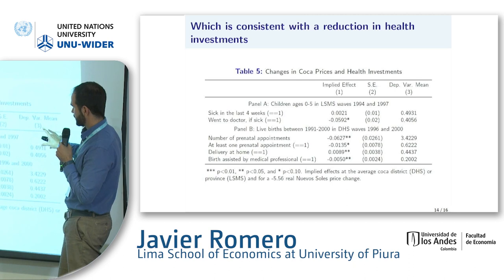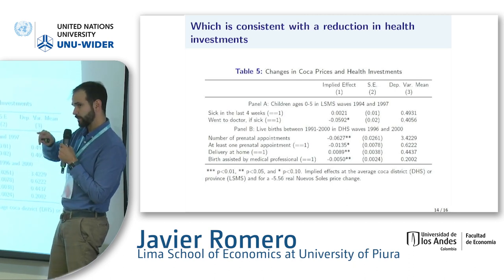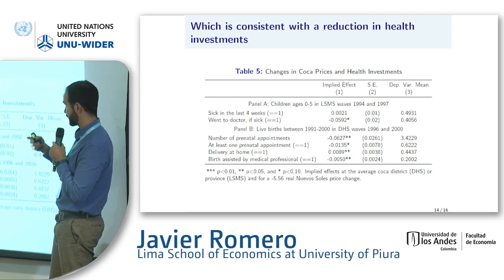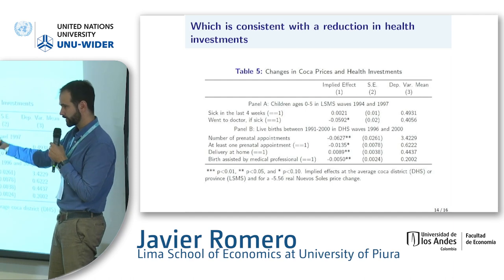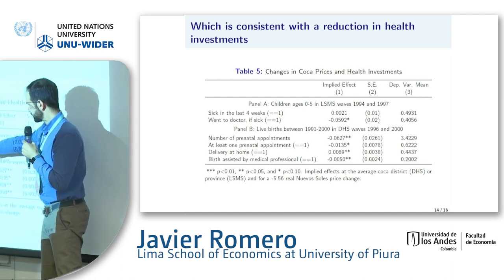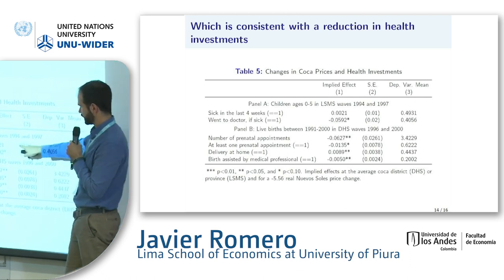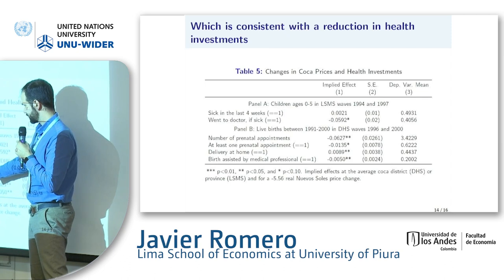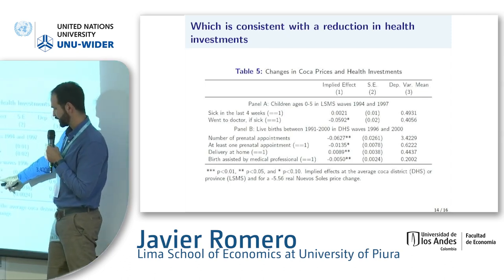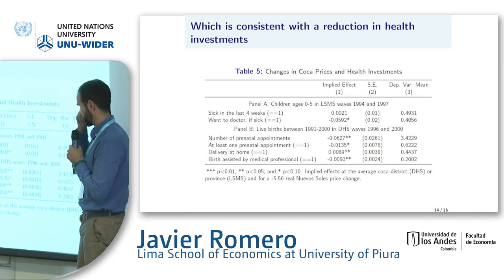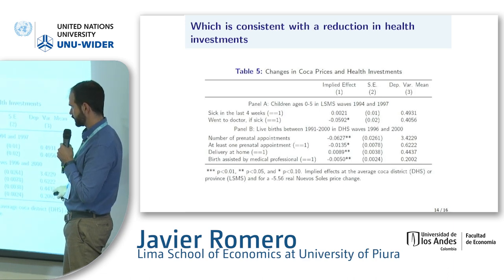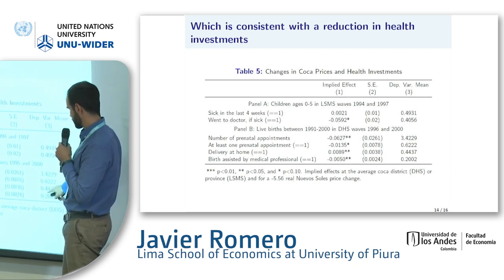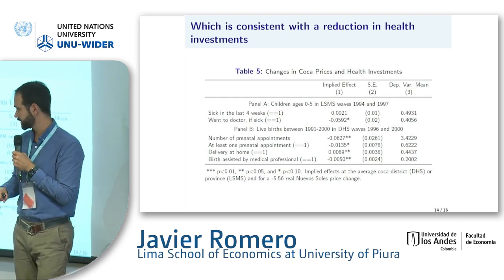Finally, we look at health investments. This is probably the result of the combination of these two mechanisms: households have less money to spend and are spending less on health, and primary caregivers have less time because they're working more for pay. What we see is that children zero to five years of age are not necessarily more likely to be sick, but they are much less likely to be taken to a doctor when they are sick. We also see that pregnant women are less likely to have at least one prenatal care appointment, the number of prenatal care appointments decreases, there is a higher likelihood of observing a delivery at home — which is a higher risk type of delivery — and therefore a lower probability of the birth being assisted by a medical professional.